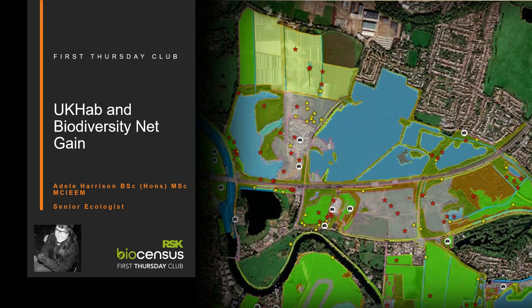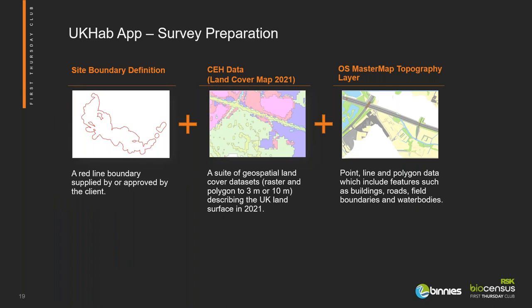Hello everyone. My name is Adele Harrison. I'm a senior ecologist at Binnies working with the environmental and geospatial departments. I'm going to take you through how we're using the apps described by Tom earlier to adapt to the requirement for UKHAB surveys and biodiversity net gain. Binnies have created a bespoke app to create efficiencies in habitat surveys. For those unfamiliar with UKHAB, it's a relatively new habitat classification system which includes different levels of detail, often to a higher level than the more commonly used phase one habitat survey method.